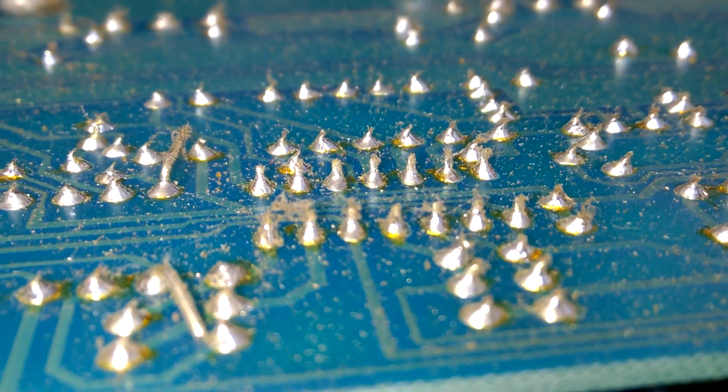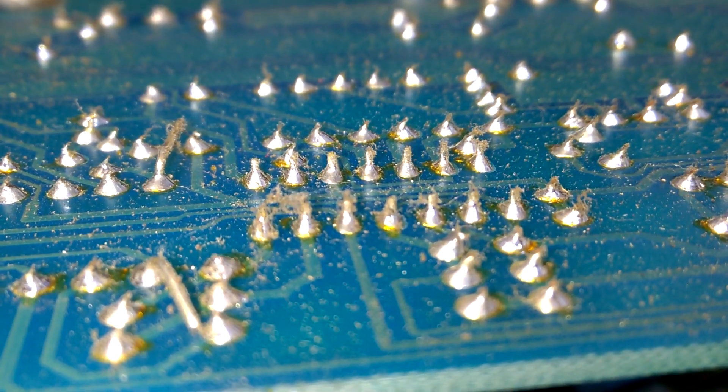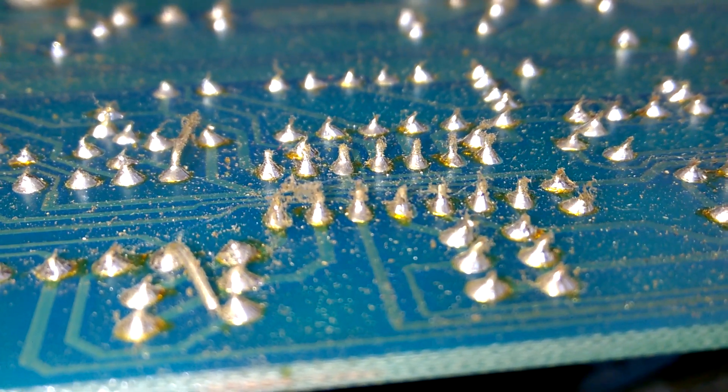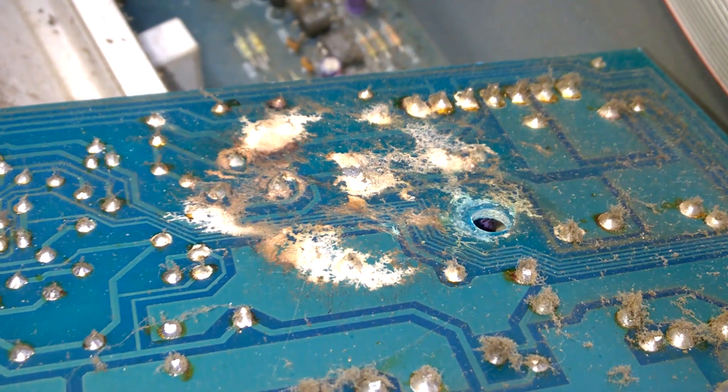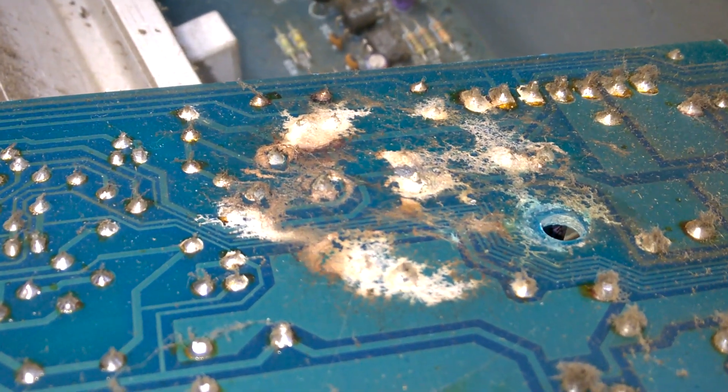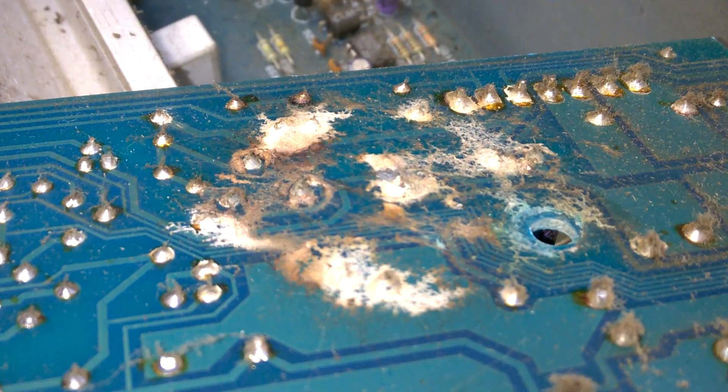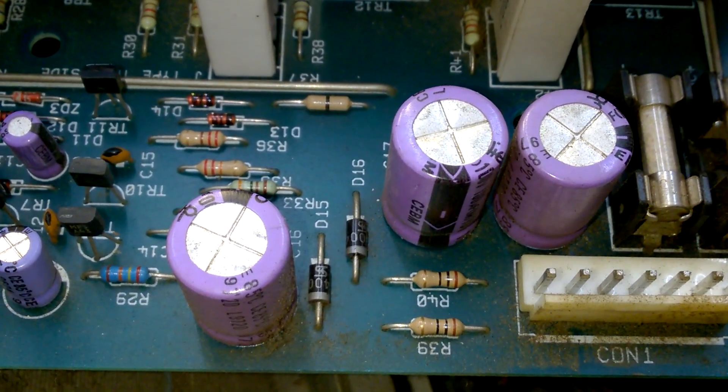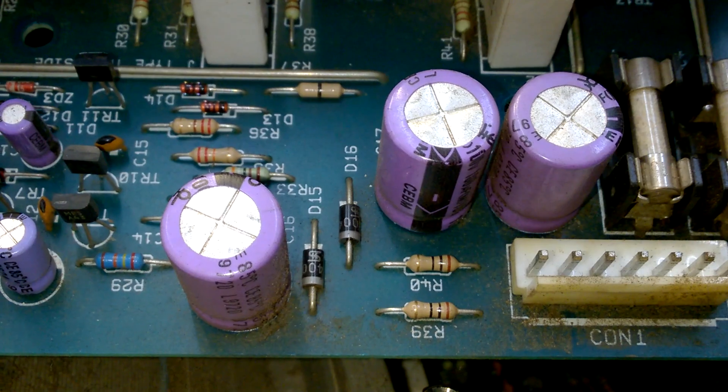I will replace the LM339 and then probably channel A will work again. Look at this mess. I have no idea what this is. I will try to clean it up. Give me a second. This is on this side here. I also will replace these old Dubelier caps.